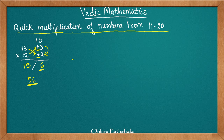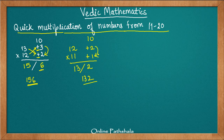Let's try another example a bit faster: 12 multiplied by 11. Base is 10; 12 is plus 2 more, 11 is plus 1 more. 2 into 1 is 2, and 12 plus 1 is 13, so the answer is 132. You can also verify: 11 plus 2 also gives 13. By comparison, the conventional method requires several partial products and addition steps — this Vedic method is much faster with practice.